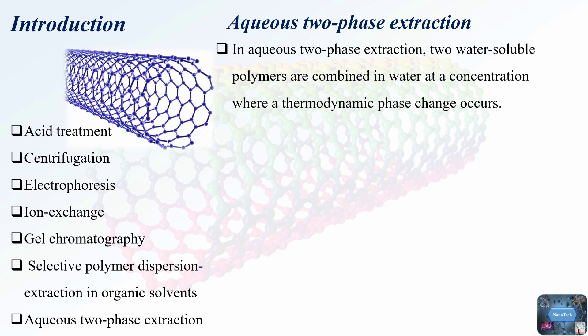Typically, these polymer phases exhibit differing solution densities. The concentration required for the polymers to induce the phase transition relies on the chemical characteristics of each polymer, as well as their distributions in molecular mass. When the polymer concentrations exceed the critical concentration line, under equilibrium conditions, the mixture will naturally divide into two phases with concentrations at the respective phase boundaries. The common way to use ATPE with SWCNTs is by adjusting surfactant amounts to control how the nanotubes separate into two phases.